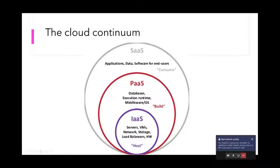So from the inside to the outside: IaaS covers infrastructure, networks, firewalls, that kind of stuff. PaaS is the runtime — your Java app or your code runs there. And SaaS is software as a service where you can consume services that have been made available to you.